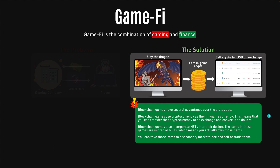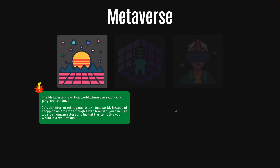Next, let's move on to the metaverse. What is the metaverse? The metaverse is a virtual world where users can work, play, and socialize — it's the internet reimagined as a virtual world. Imagine you're shopping on Amazon as you do today, looking through a web browser in 2D. But if you were doing this in the metaverse, the Amazon store would look like a virtual store in a mall, where you're exploring the shelves and looking at every item from different angles. That's how the metaverse will incorporate real-life items into it.